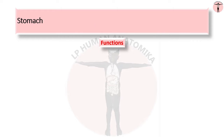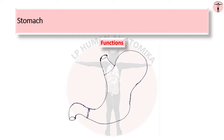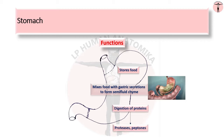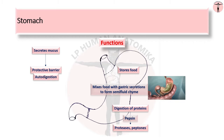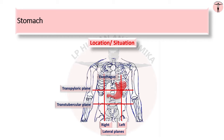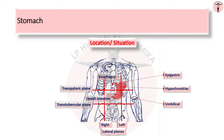The stomach is a dilated portion of the alimentary canal with the following main functions: it stores food; mixes food with gastric secretions to form a semi-fluid chyme; allows digestion of proteins to proteoses and peptones with the enzyme pepsin in an acid medium; secretes abundant mucus as a protective barrier; and controls the rate of delivery of chyme to the small intestine. The stomach is situated in the upper abdomen, in the epigastric, umbilical, and left hypochondrium regions, extending from beneath the left costal margin.